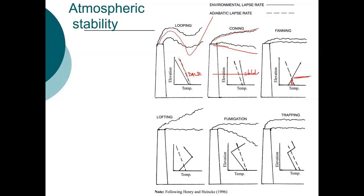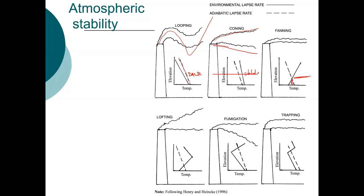You can also have a lofting plume, where the plume is rising but not moving down toward the surface, so pollutants disperse above but not below. The worst case is fumigation — the plume disperses downward toward ground level and not upward, giving very high concentrations below. You can also have a complicated condition called trapping, which is somewhat similar to fanning.